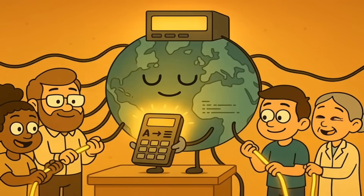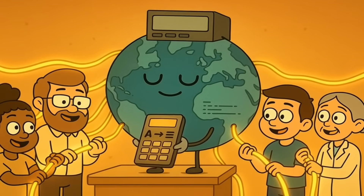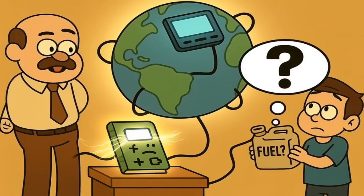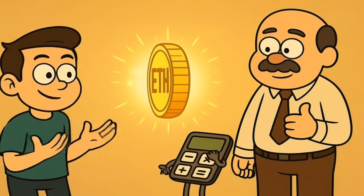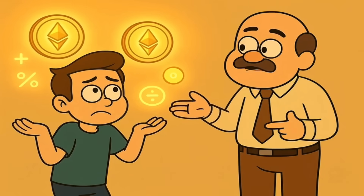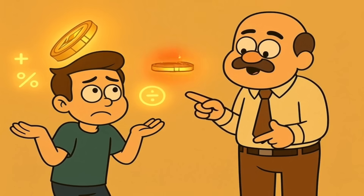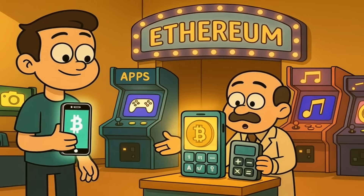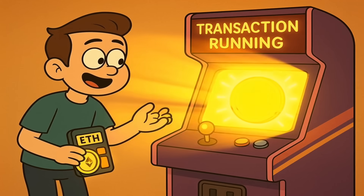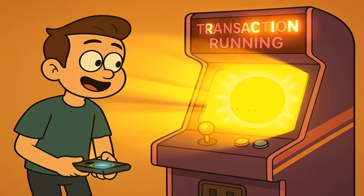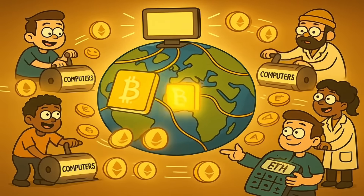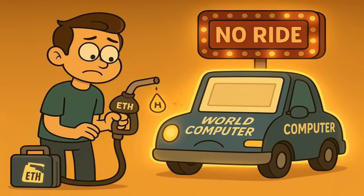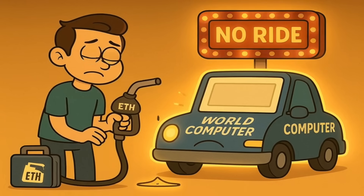If Ethereum is a giant world computer, it needs some fuel to make it run — you can't just run programs for free. And this is where Ethereum's own currency comes in. It's called Ether, or ETH for short. While some people do buy and sell Ether as an investment, just like Bitcoin, its main purpose within the system is to be the gas that powers everything. Think of it like an old arcade: the arcade is the Ethereum network, and the games are the programs and apps. If you want to play a game, you have to put a quarter in the machine. In Ethereum, if you want to run a program, make a transaction, or use any app, you have to pay a small fee in Ether. This fee is literally called gas. It pays the people around the world who are lending their computer's power to keep the whole system running. No gas, no ride. No Ether, no using the computer. So Ether is the fuel, not just the money.